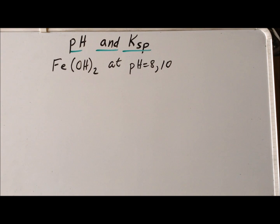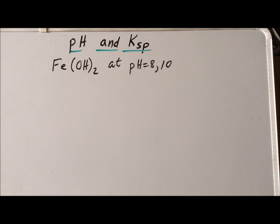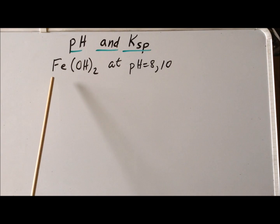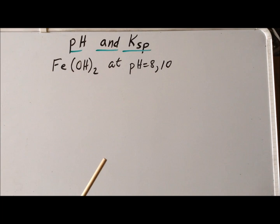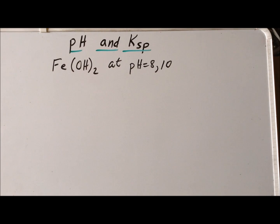Hello, in this video we are going to calculate the molar solubility of iron 2 hydroxide, otherwise known as ferrous hydroxide, at two different pHs: first at pH 8 and secondly at pH 10.